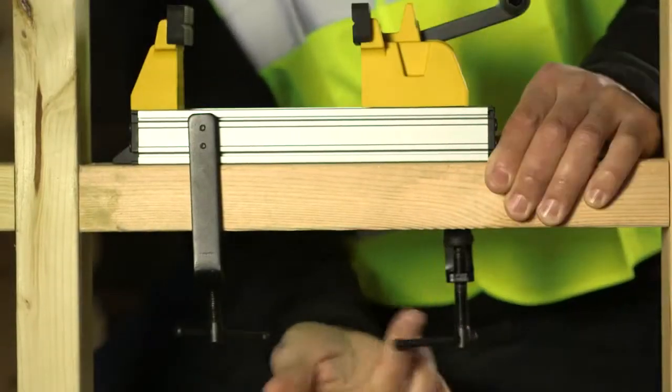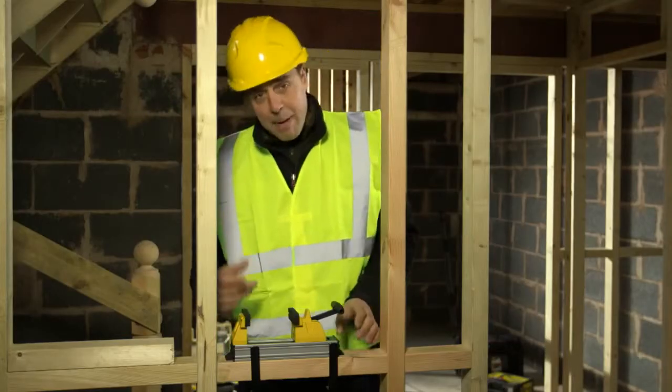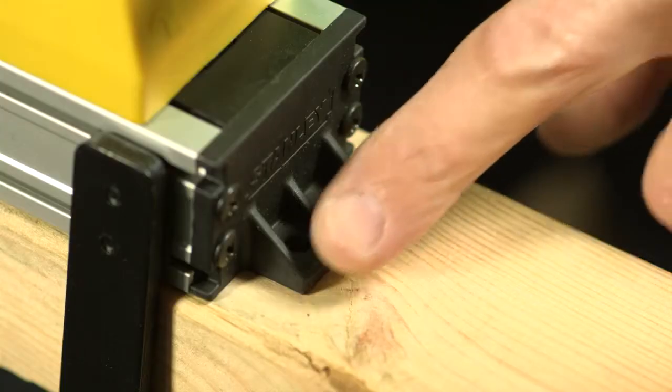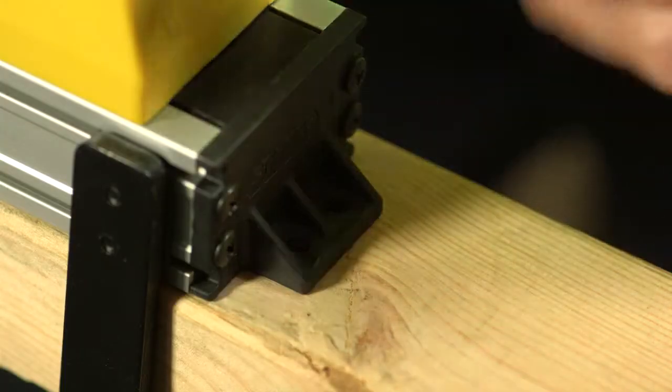These are reversible so you can have them on either side. If you'd like to fix it a bit more permanently there are some pre-drilled holes at either end on the clamps. You can just screw it down to a desk.